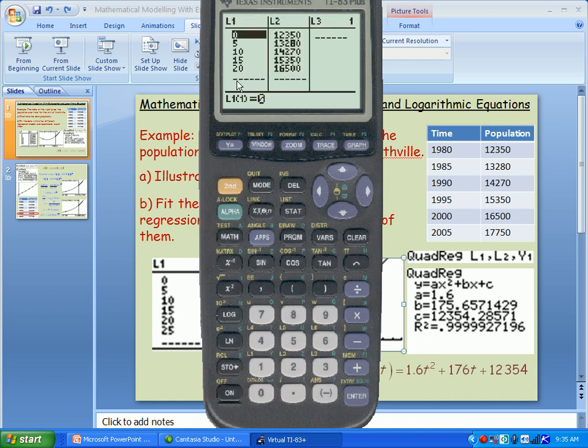In the left-hand column is the time, the year. Now notice I didn't type in 1980, 1985, etc. I typed 0, 5, 10, 15, 20. So the left-hand column in my data chart is the number of years after 1980. So I do need to type in the last one which would be year 25. That's 2005, 25 years after 1980, and the population for that is 17,750.